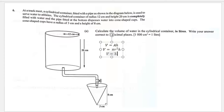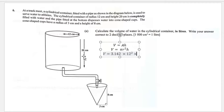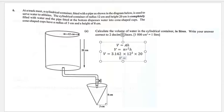The question didn't tell us the value for pi, so we'll use 3.142. Volume equals 3.142 × 12² × 20. When we put this into the calculator, we get 9048.96 cm³.